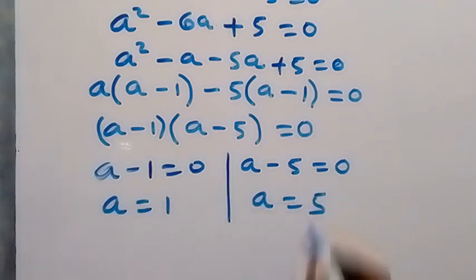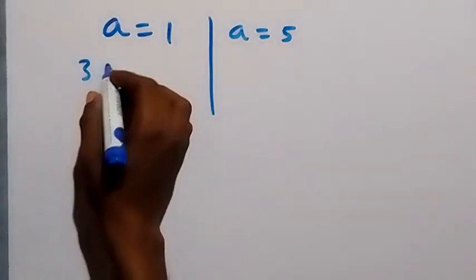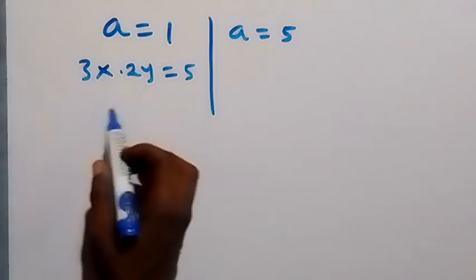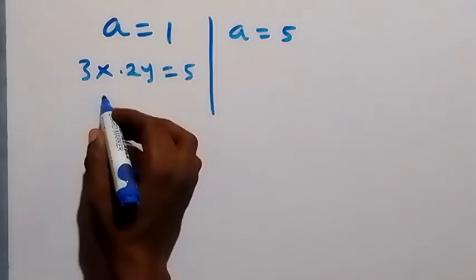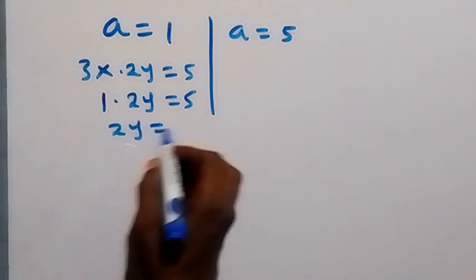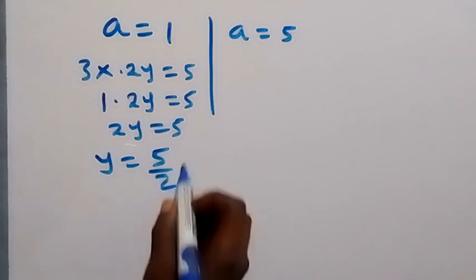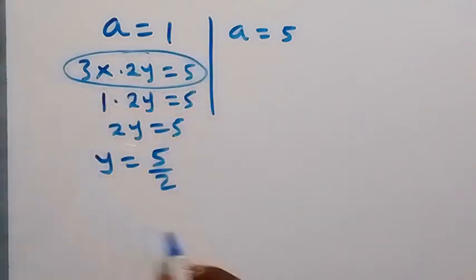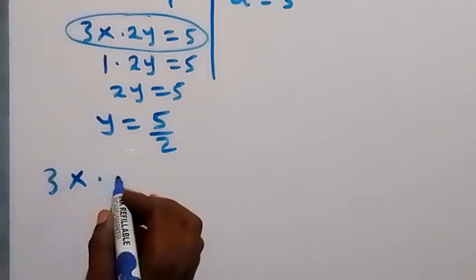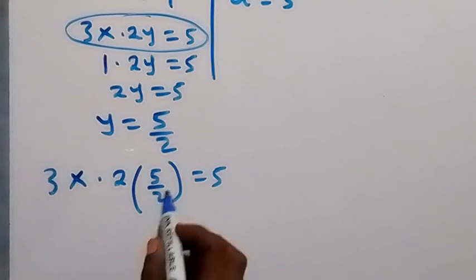Recall equation 2 is 3x times 2y equals 5, and we represented 3x as a. Since a equals 1, we have 1 times 2y equals 5, which gives 2y equals 5. Dividing both sides by 2, y equals 5 over 2. Substituting y back, we have 3x multiplied by 2 times (5 over 2) equals 5.